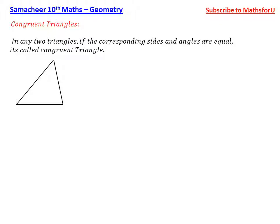If the corresponding sides and angles are equal, we will talk about the diagram. This is triangle ABC. This is the angle we want to note: one, two, three. Then another triangle — it is the same shape but different. You will understand better.